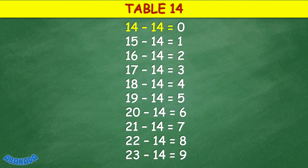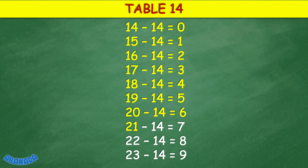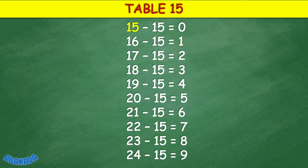Table 14: 14 minus 14 equals 0, 15 minus 14 equals 1, 16 minus 14 equals 2, 17 minus 14 equals 3, 18 minus 14 equals 4, 19 minus 14 equals 5, 20 minus 14 equals 6, 21 minus 14 equals 7, 22 minus 14 equals 8, 23 minus 14 equals 9.